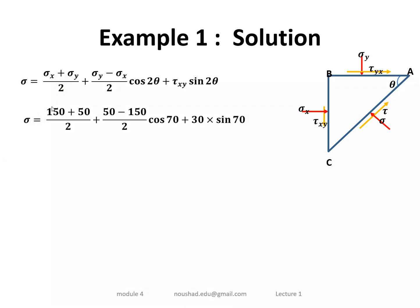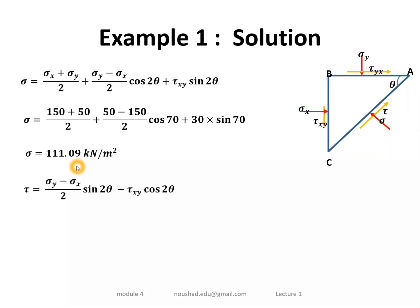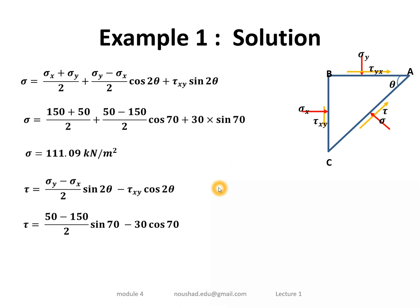Substituting sigma_x = 150, sigma_y = 50, and theta = 35 degrees, we get sigma equal to 111.09 kN/m². Using the shear stress equation (sigma_y − sigma_x)/2 · sin 2θ minus tau_xy · cos 2θ, we get tau equal to −57.5 kN/m².